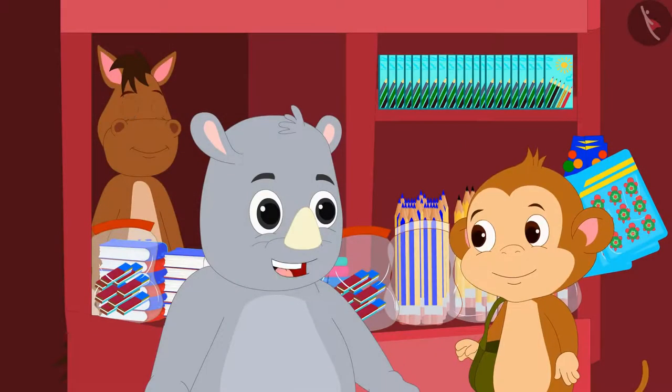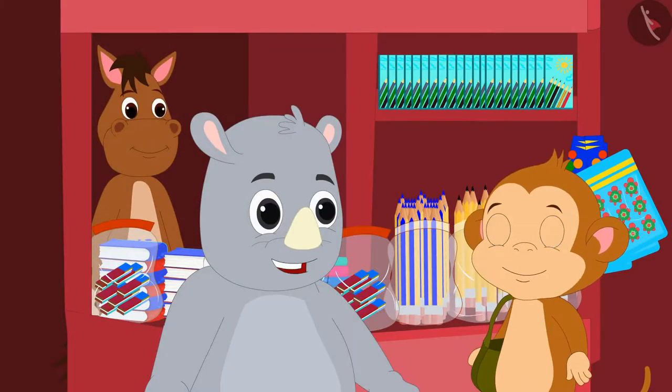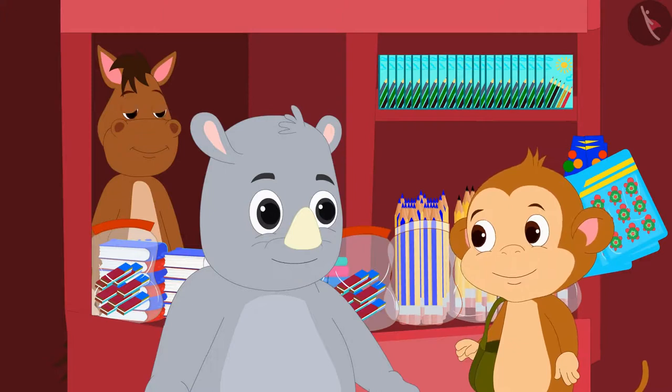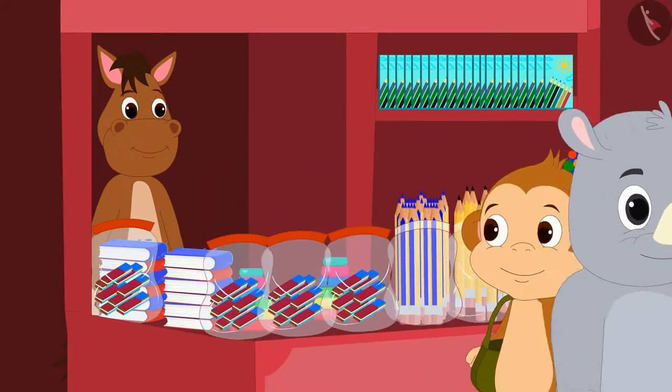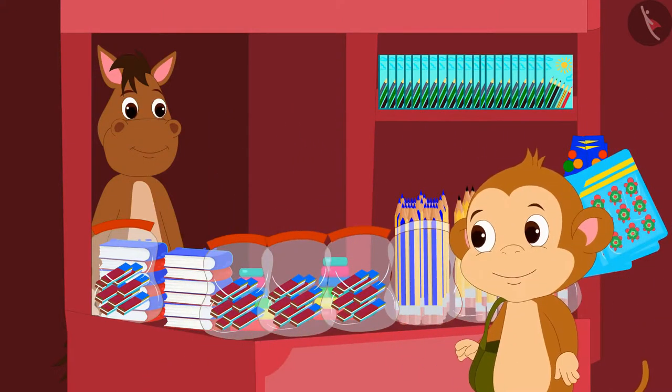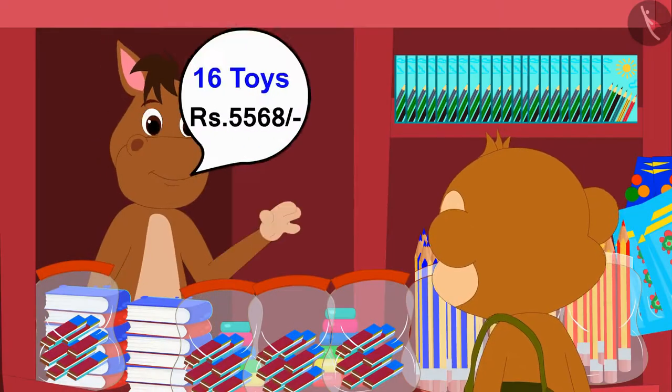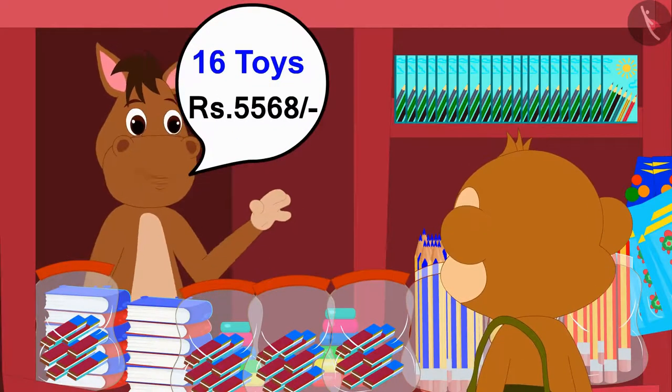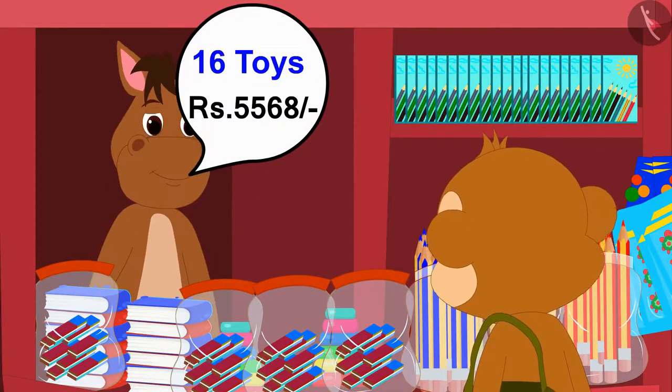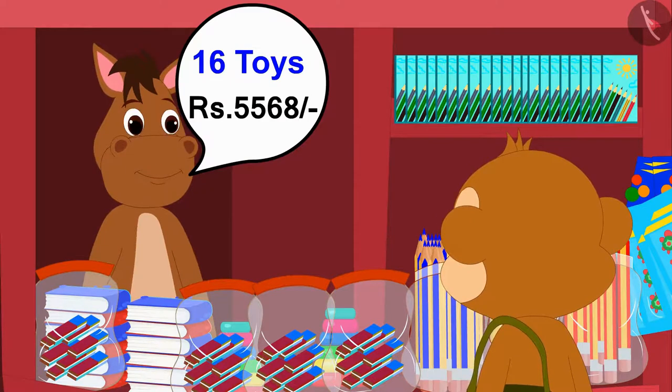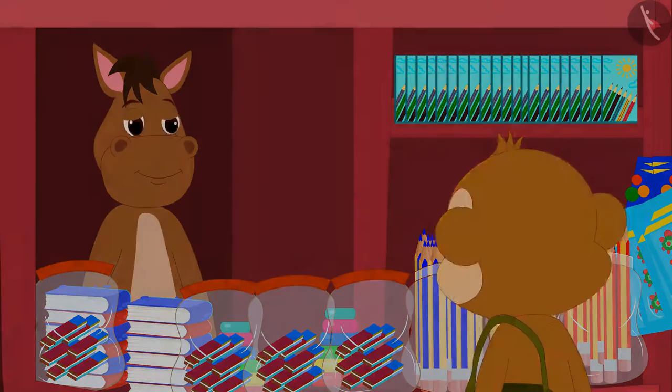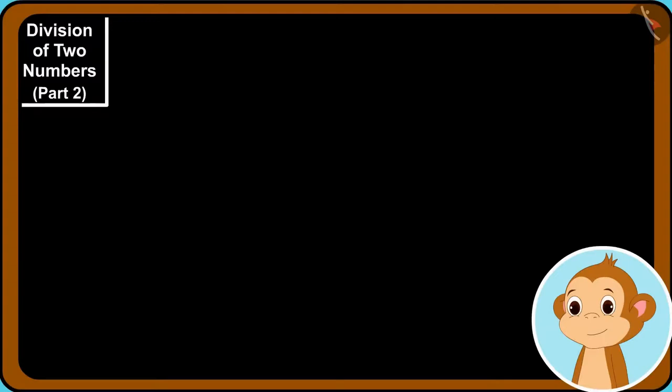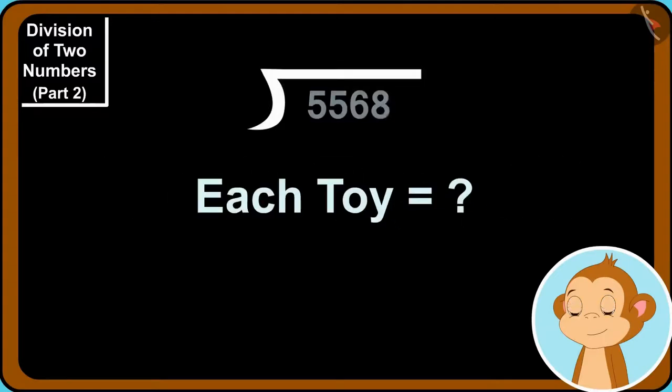Yes, Babban. See how easy it is. Saying that, Gaggoo left from there. Now, Babban bought 16 toys for 5,568. Babban wants to find out how much each toy is worth by using the simple division process learned from Gaggoo.